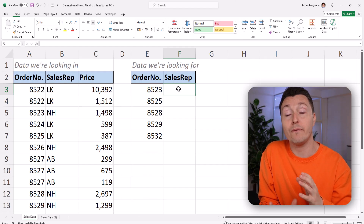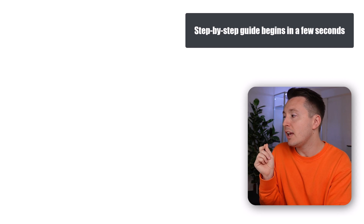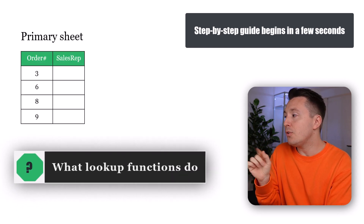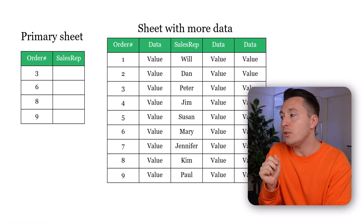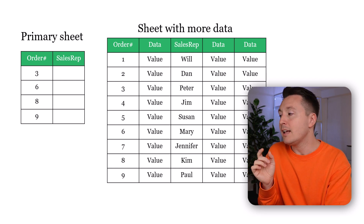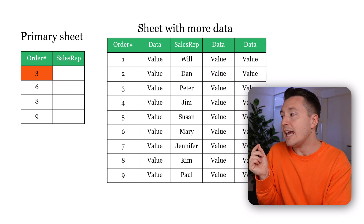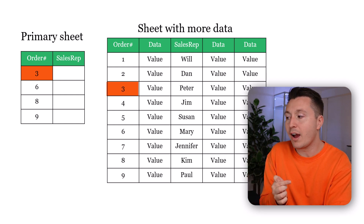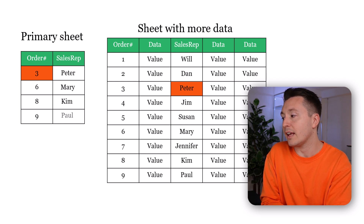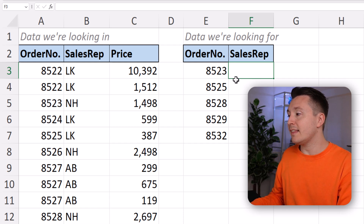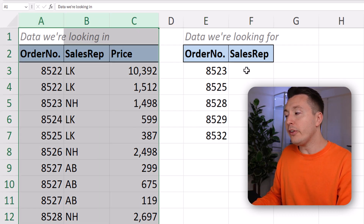Let me first show you how to do what VLOOKUP does with XLOOKUP instead, so you don't have to use VLOOKUP ever again. If you're new to lookup functions, here's what it does. Let's say your boss sends you a list of order numbers and she wants you to find out who sold those orders. You have an order database and you could look through it manually, but it will take a while. Instead, you use a lookup function to look for the specific order number from your primary sheet, find it in the order database, look to the right, find the sales representative, and return that name — and you do that for multiple order numbers.